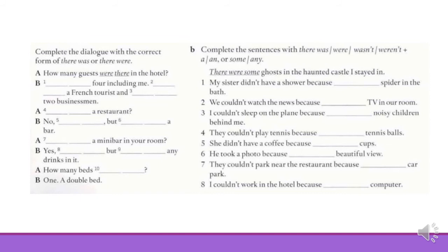Here we have some more exercises. In this case, we are going to practice there was or there were. We have to complete the dialogue with the correct form. For example: how many guests were there in the hotel? We are using past tense, plural noun, and a question mark — that's why we use the interrogative form, were there. Now please stop the video, complete the rest, and then we will check the answers.